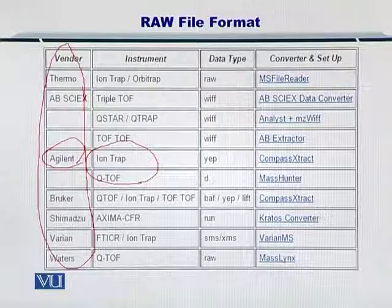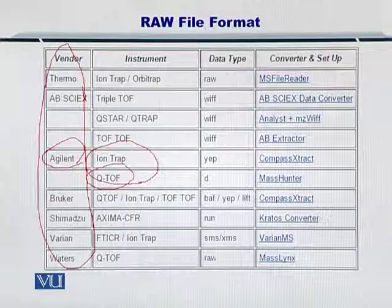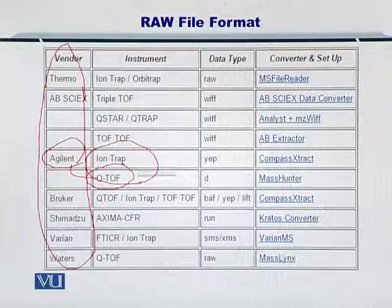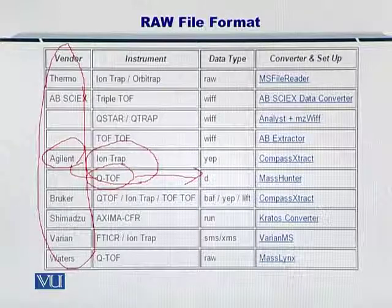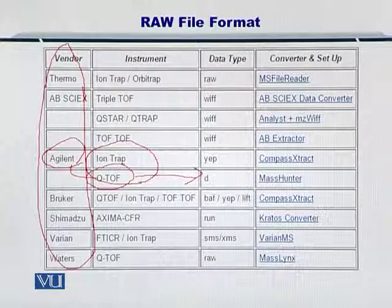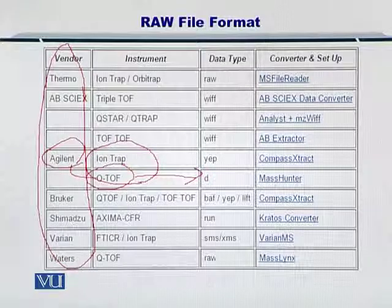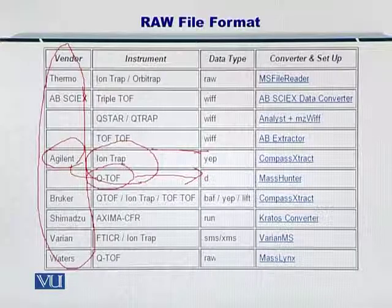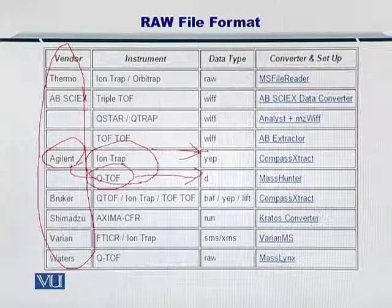If you buy a QTOF mass spectrometer from Agilent, you will have a .d file. But if you have an ion trap from the same company, the mass spectrometer will output a YEP format file.